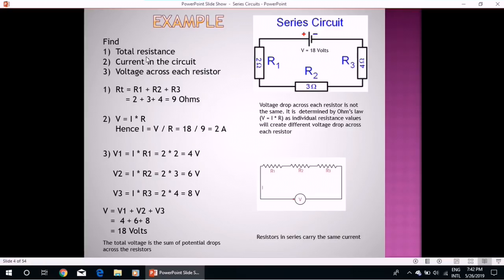Now we have to calculate: number one, total resistance of the circuit; number two, current in the circuit; and number three, voltage across each resistor. Because we know that voltage drop across each resistor is not the same, it is determined by Ohm's law as individual resistance values will create different voltage drop across each resistor.